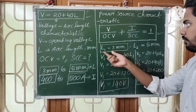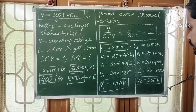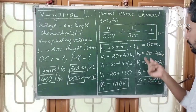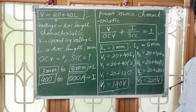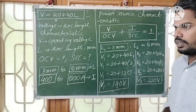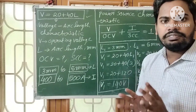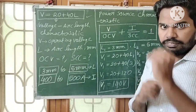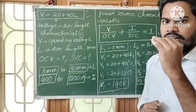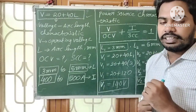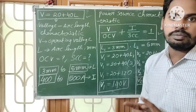For L1 = 3 mm, the voltage V1 = 140 volts. For L2 = 5 mm, the voltage V2 = 220 volts. Now we need I1 and I2. There is an important concept: if current increases, arc length decreases. Current and arc length are inversely proportional to each other.